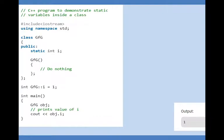Let us see how this static variable is used. We start with hash include and using namespace. Now we are declaring a class gfg. In that we have a public variable which is static integer i. The scope of this variable is limited to this gfg. Next we have a constructor gfg. The name of the class and name of the function is the same. We will learn about constructor in the next lecture.